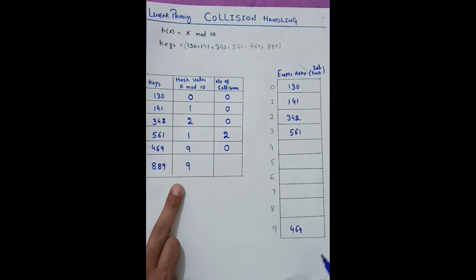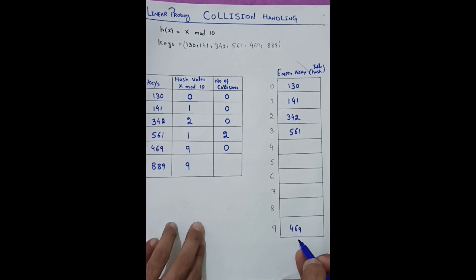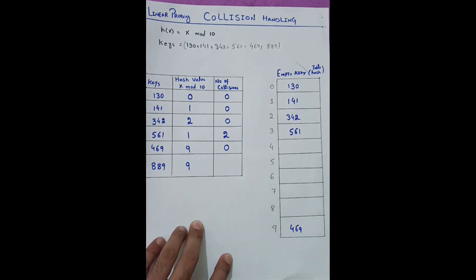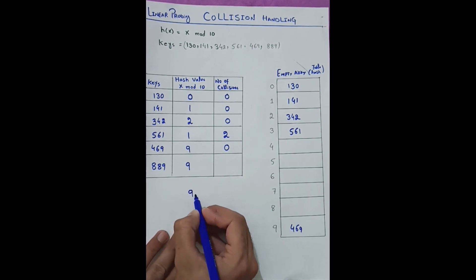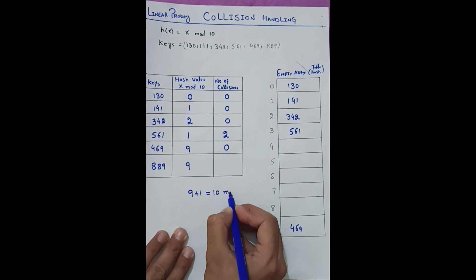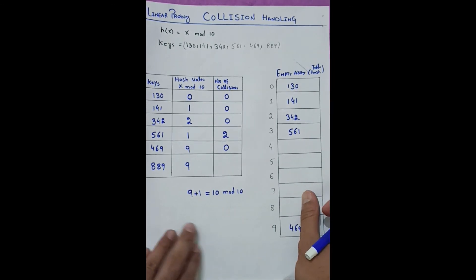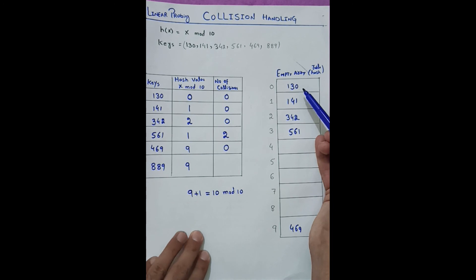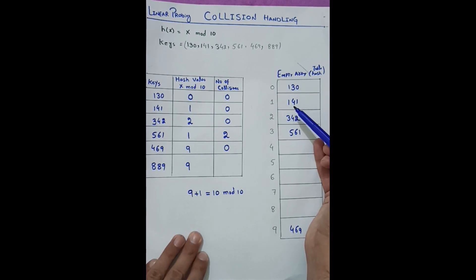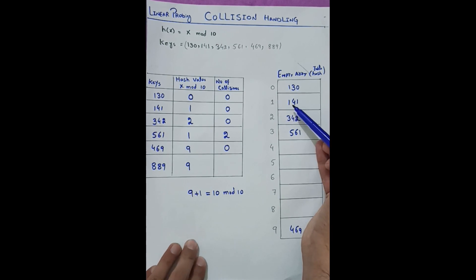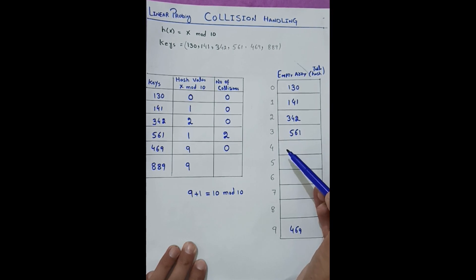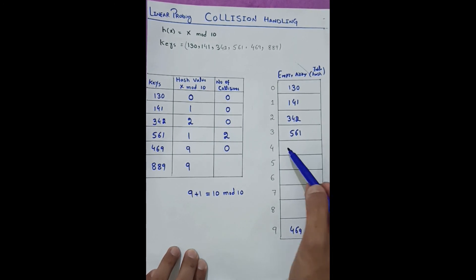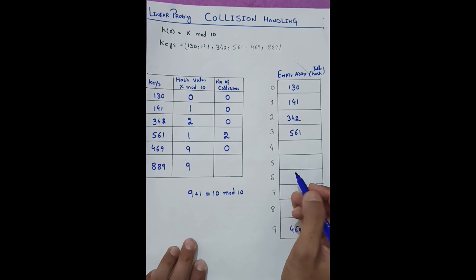For 889, its mod is 9, but index 9 is already filled. We increment: 9 + 1 = 10, and 10 mod 10 = 0, but index 0 is filled. Index 1 is also filled, and index 3 is also filled, so we keep checking the next possible place using linear probing.